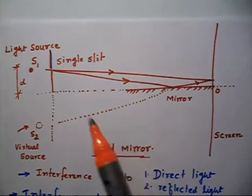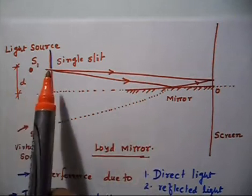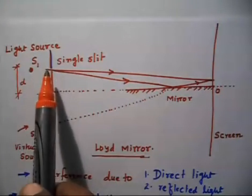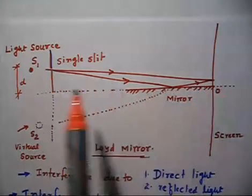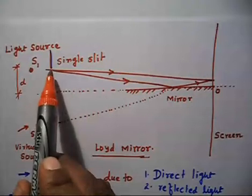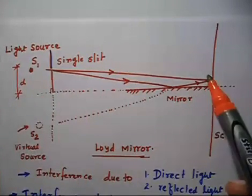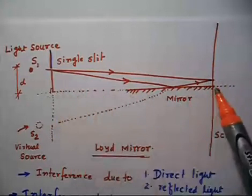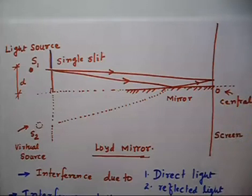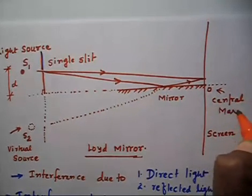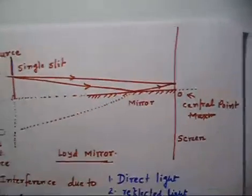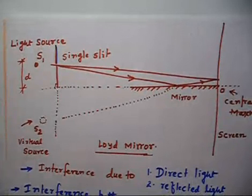Now we have a source S1 — this is the Lloyd's source. There is a slit, and it is only one slit. In Young's double slit experiment we have two slits; here we have only one slit. There is a plane mirror. If I extend the horizontal line, the perpendicular distance from this slit to the horizontal line is D. There is a screen, and if I extend the horizontal line it cuts at point O — this is called the central point.